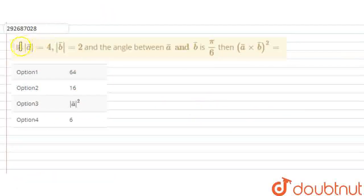Hello friends. In this question, if the magnitude of vector a equals 4 and the magnitude of vector b equals 2, and the angle between a and b is π/6, then (a⃗ × b⃗)² equals 64, 16, |a⃗|², or 6?